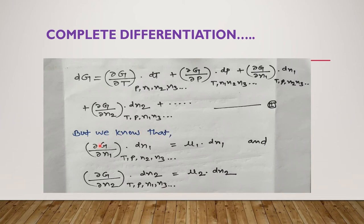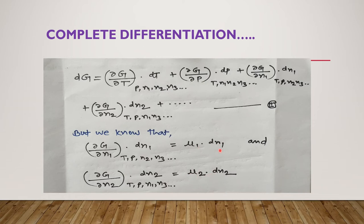We know that (∂G/∂N1)·dN1 at constant temperature, pressure, and other moles is nothing but μ1, the chemical potential. Similarly, (∂G/∂N1) at constant temperature, pressure, N2, N3 is simply μ1. In the same way, (∂G/∂N2)·dN2 at constant temperature, pressure, and other moles N1 and N3 gives μ2·dN2. Remember these two values: μ1·dN1 and μ2·dN2.